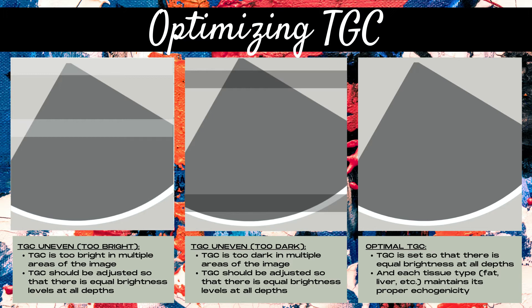You don't want to adjust the aorta, which is anechoic, to be the same brightness level as the liver, which should be a medium gray shade. In the middle image, the TGC is uneven because several sections are too dark. For an optimal TGC, shown in the far right image, the TGC is set so that there's equal brightness at all depths.